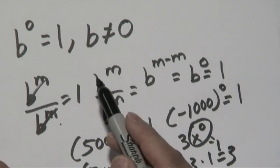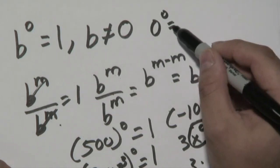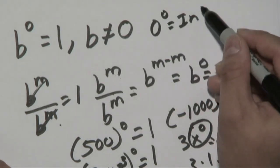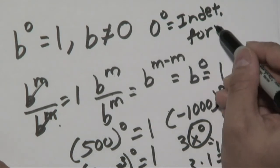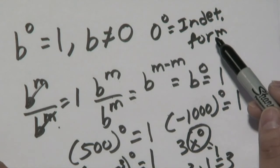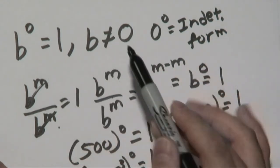Now, back to the exception here, zero to the zero power is known as indeterminate form, which means undetermined. So the one exception here is that the base cannot be zero.